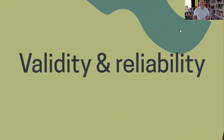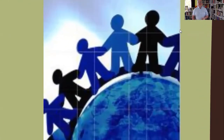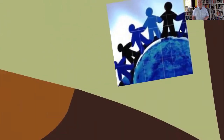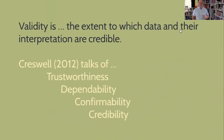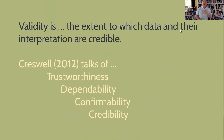When it comes to validity and reliability, you'll notice in lots of different research methods books, they talk about different qualities of research. Validity is seen here as the extent to which the data and their interpretation are credible. When I went back to that one about the problems of sexuality for ginger people, the data was saying one thing, but if I'd gone along with that, I wouldn't have been credible in my interpretation.